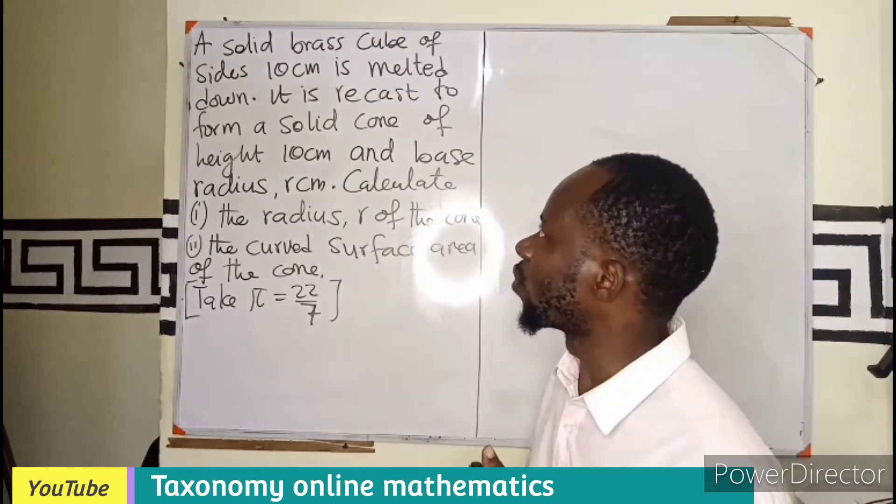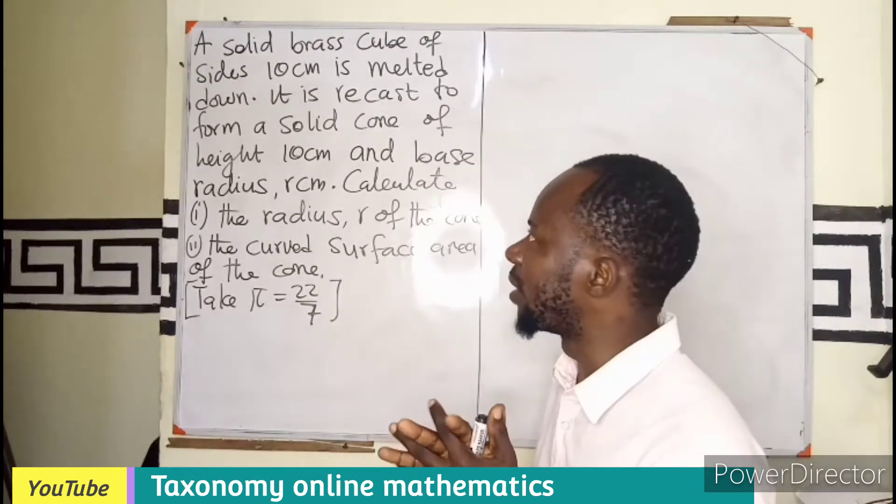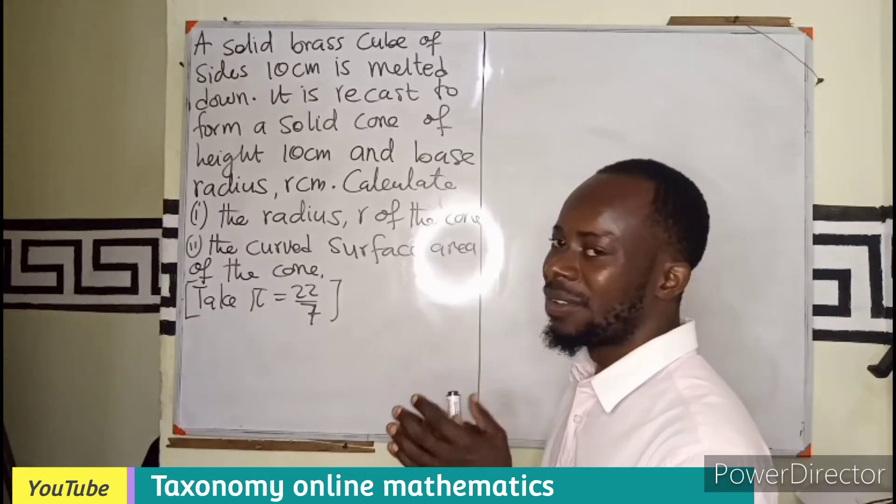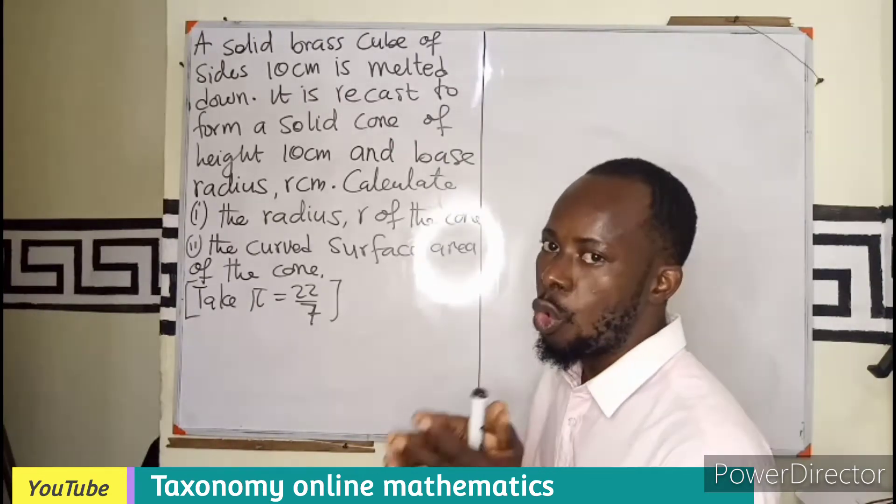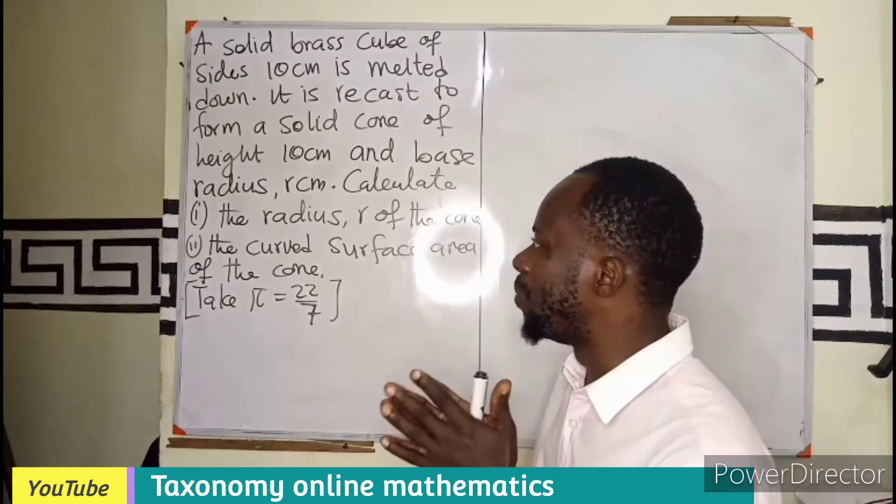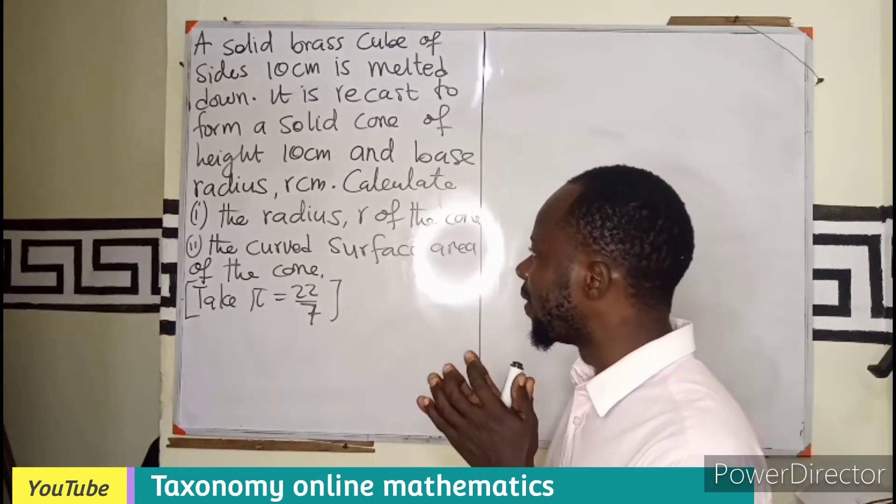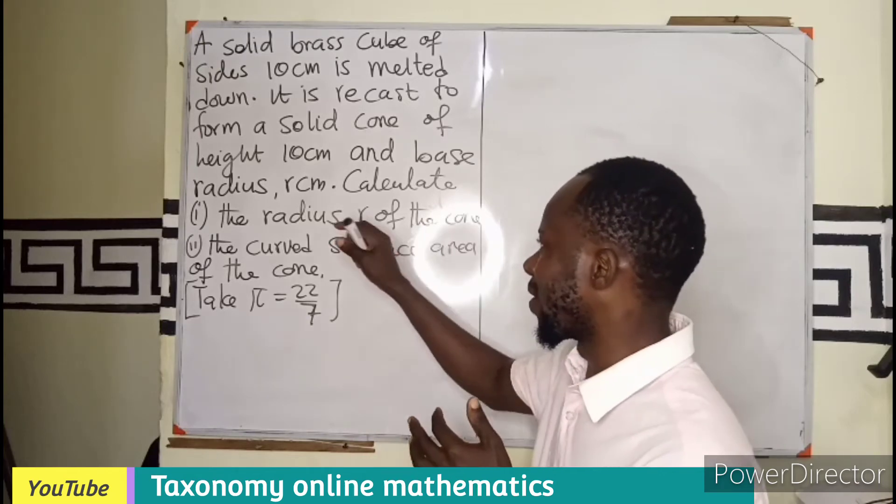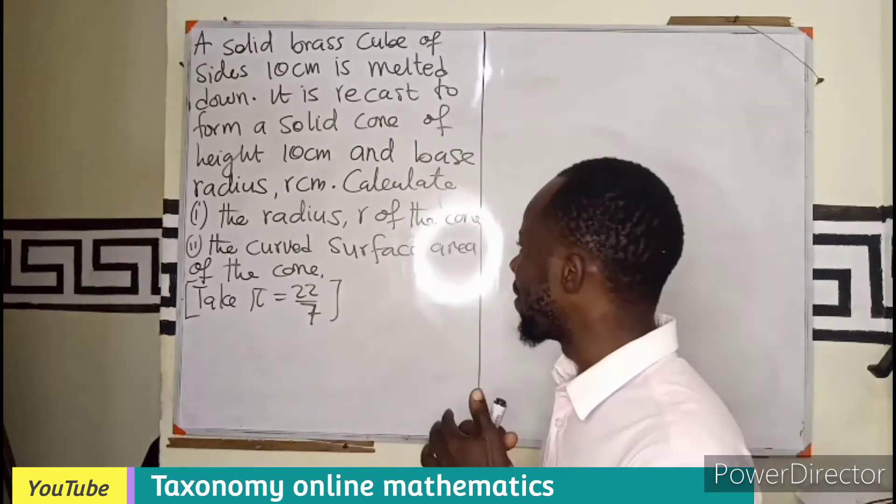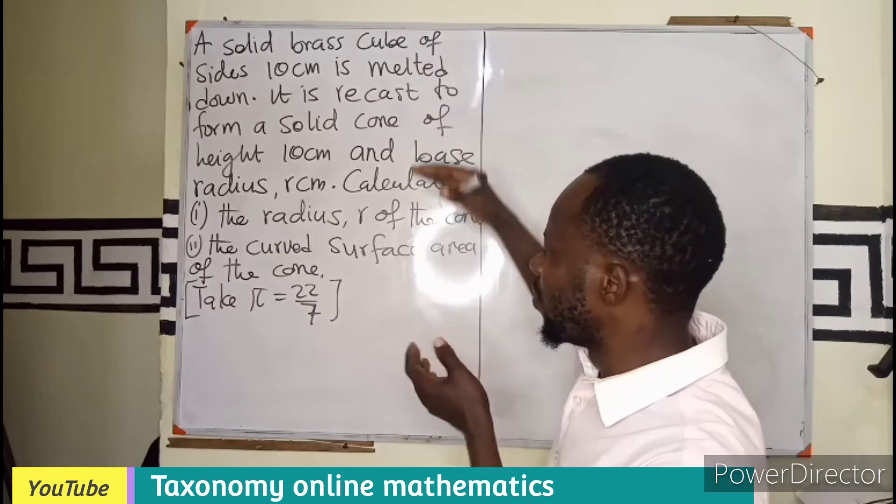We have a solid brass cube of side 10 cm that is being melted down and recast to form a solid cone of which the height is 10 cm and the base radius is r cm. Our task is to calculate the radius r of the cone, then the curved surface area of the cone.